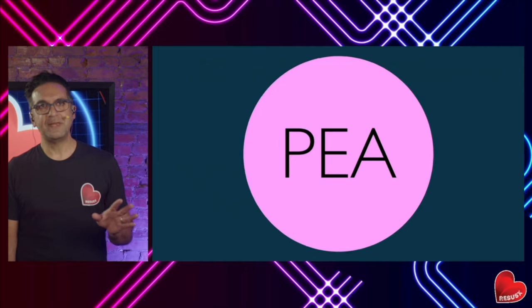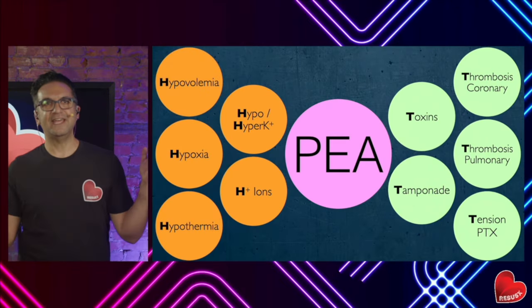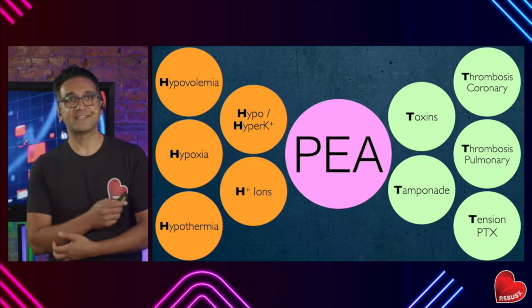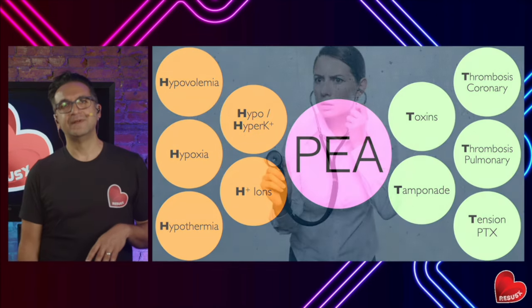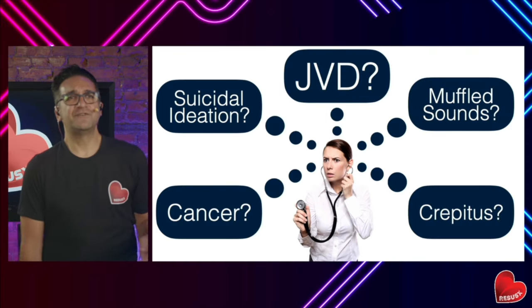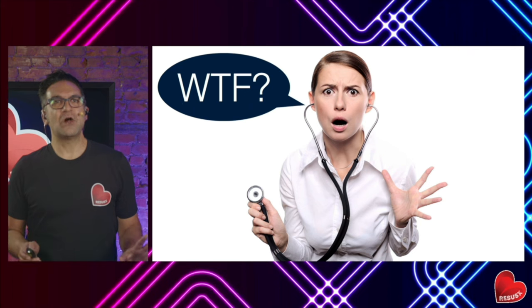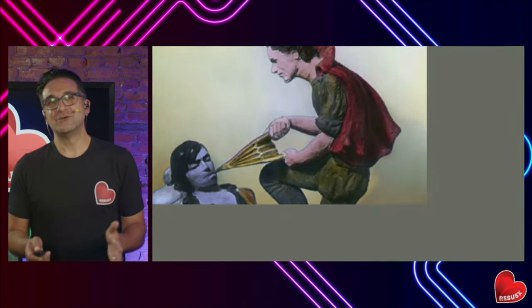Some people deep into ACLS will say H's and T's fix everything. Sitting relaxed at a conference we can probably come up with them — but during a code it's rarely ever calm. There's yelling, chaos, things being thrown around. To work through H's and T's you need a good history and a physical exam, but most of the time during arrest, that's simply not feasible. So H's and T's from an armchair aren't very helpful in the clinical arena.